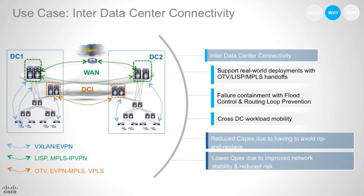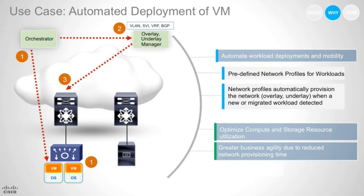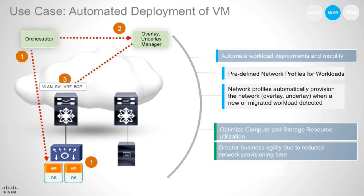The third use case is automated deployment of VMs — scalable multi-tenancy in the data center. You cannot scale without having automation, which helps you reduce your day-to-day errors in provisioning or setting up new services. You do this by pre-defining your workload profiles for the network. When a new workload profile is detected, it is used to automatically provision the switches and automate all of this. This really allows you to optimize your compute and storage resources and gives you much better business agility due to reduced network programming time.